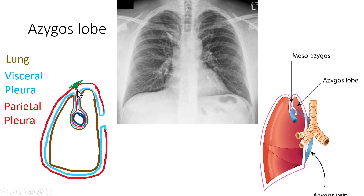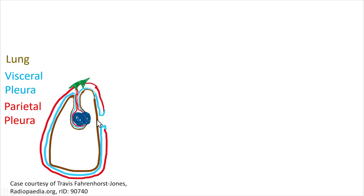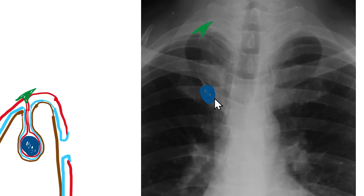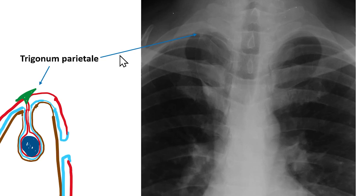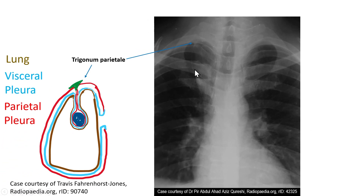If you look carefully at the uppermost part of the mesoazygos, you can see a triangular darker shadow, and the azygos vein also has a darker shadow. These two features are seen on a plain chest X-ray. This is the azygos vein, and this structure is known as the trigonum parietale, or the parietal trigon. So these two are the features you see in an azygos lobe. The mesoazygos is medial to the azygos lobe, and this is the azygos vein running its variant course.